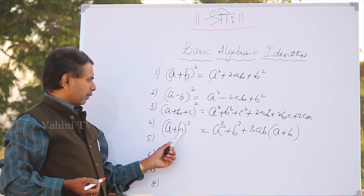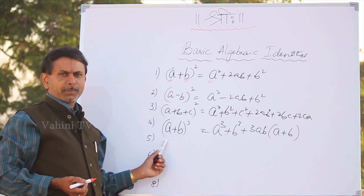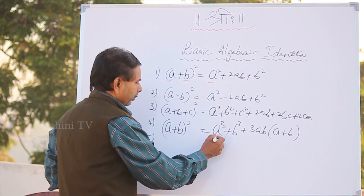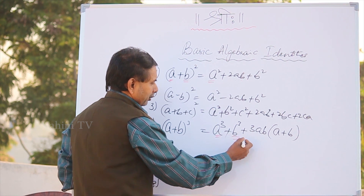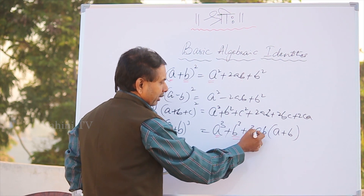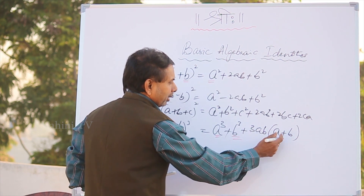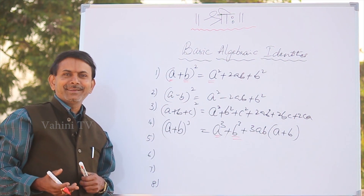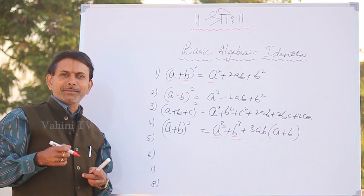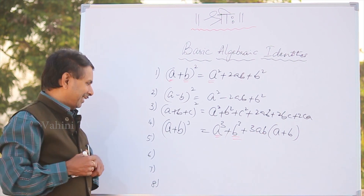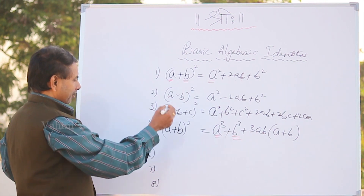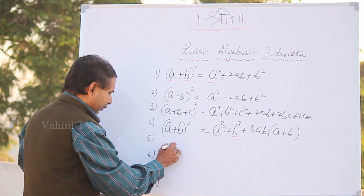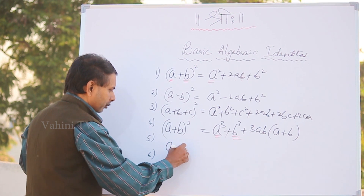Similarly, a plus b whole square maps to idli plus chutney whole cube. What is it? Idli cubed plus chutney cubed plus 3 idli into idli plus chutney. This is an easy formula. This is a plus b whole cube. This is a minus b whole cube.